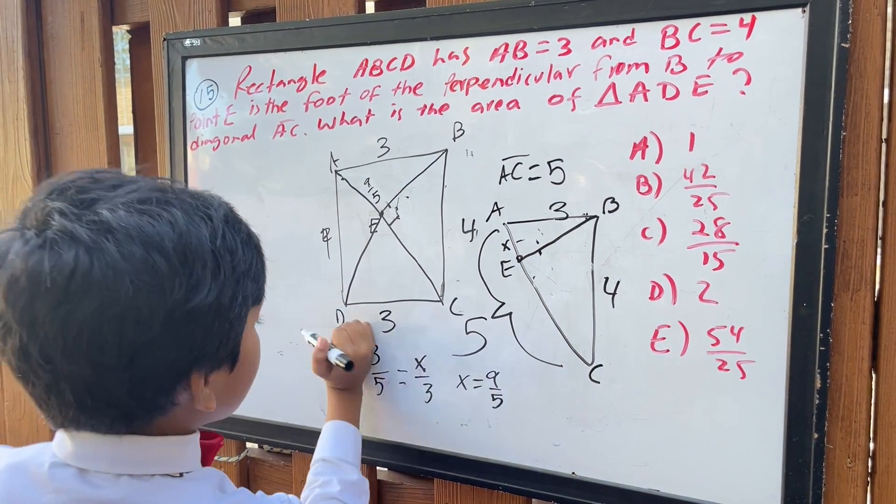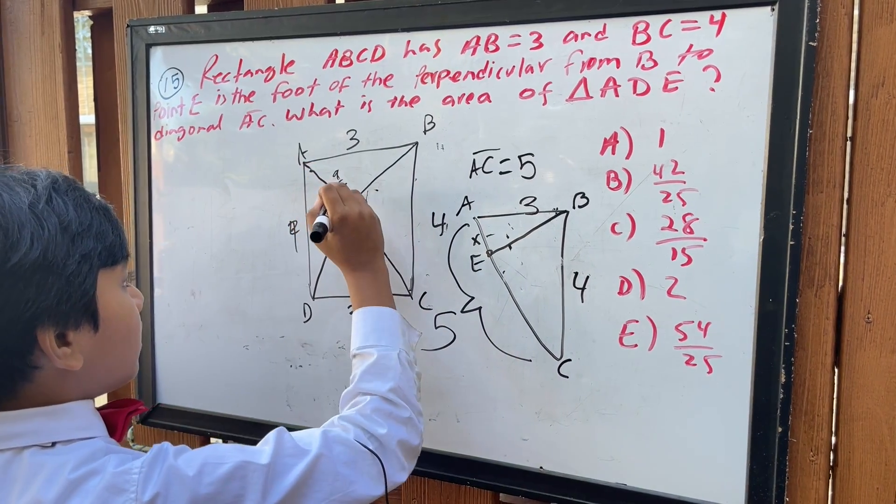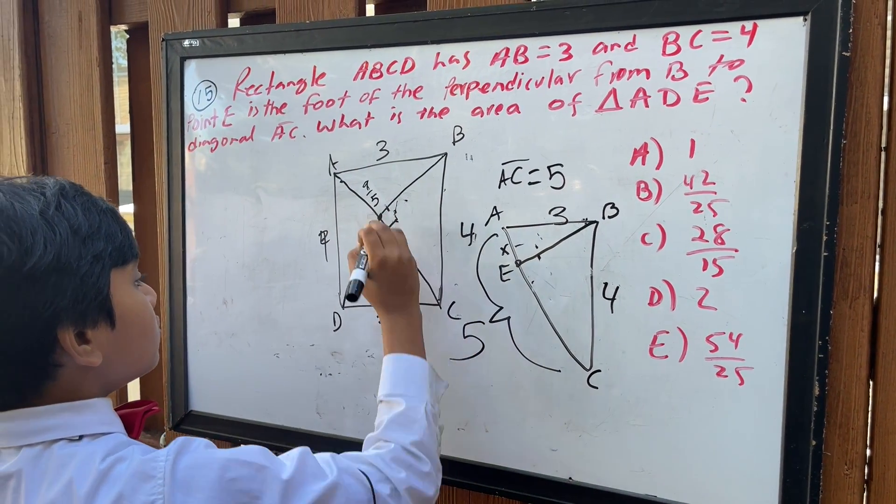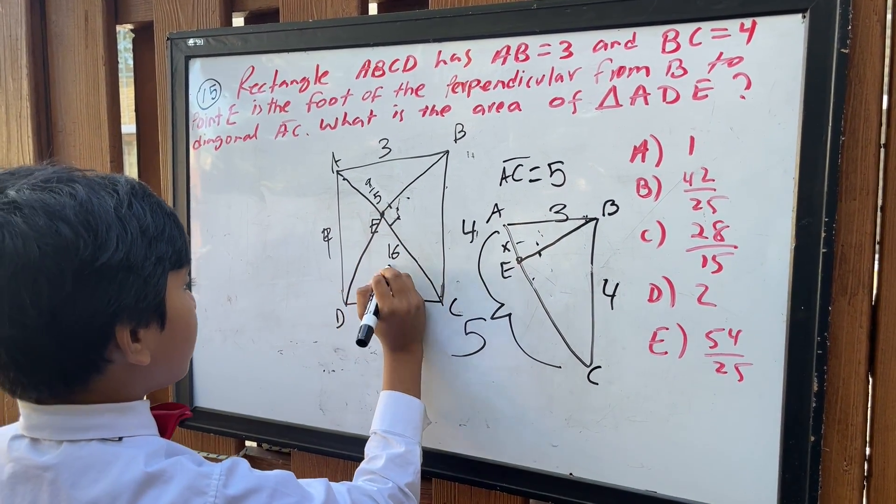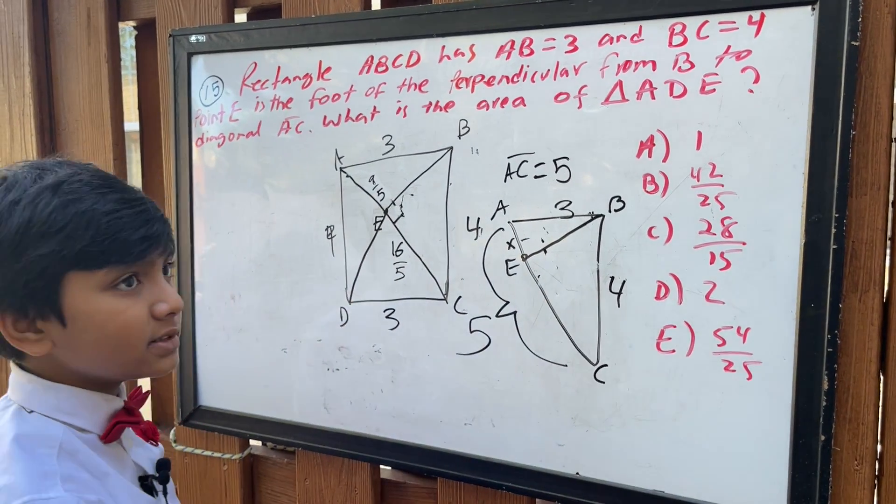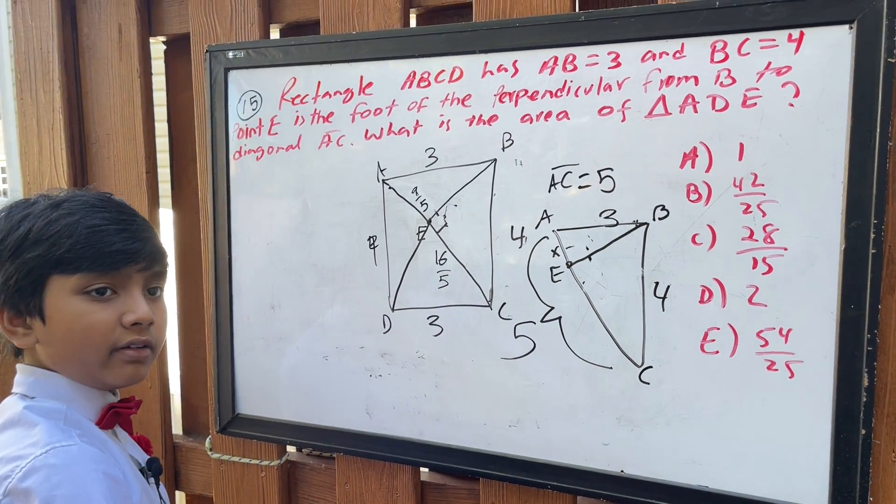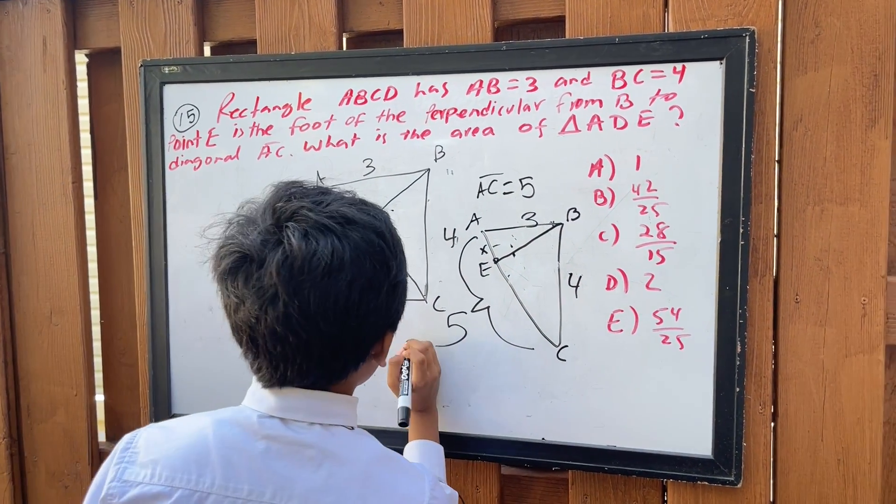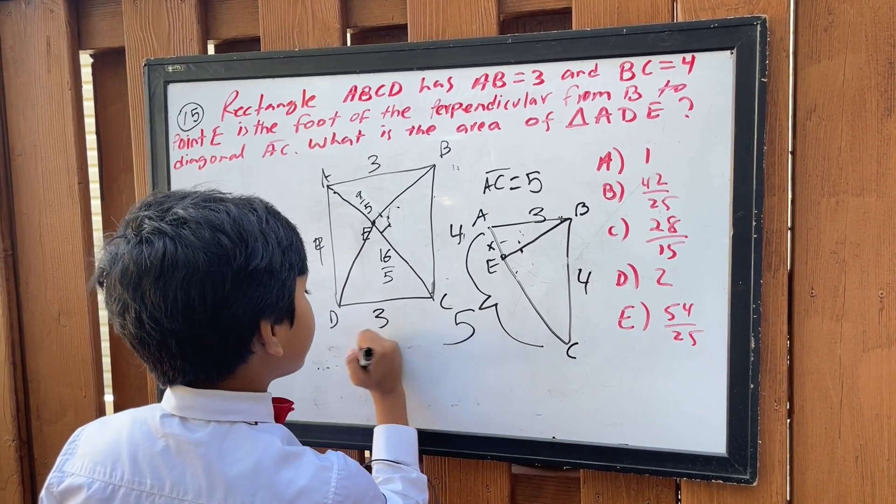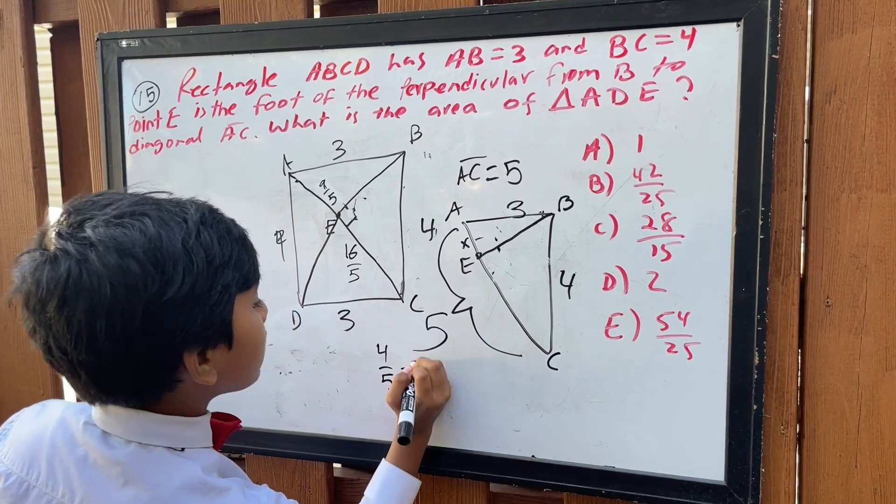And for the same reason, not only that, but also we deduce that EC must be 16 over five, because that's 25 over five minus nine over five. And indeed, if you check the math, that does actually work out.